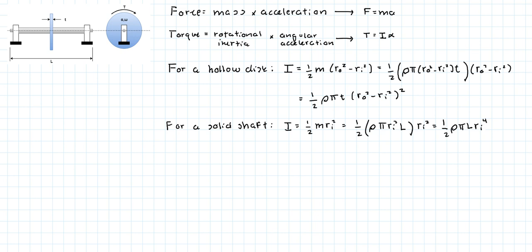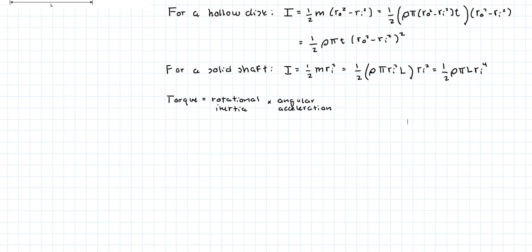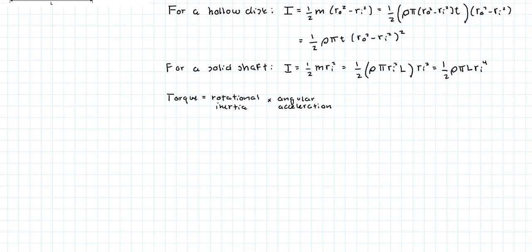Okay, so the torque is equal to the rotational inertia, which we're going to denote with the letter I. But it's the sum of the inertia of the hollow disk and the solid shaft. So we're going to write I total times the angular acceleration.